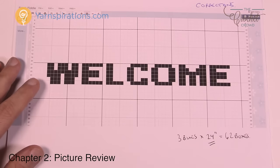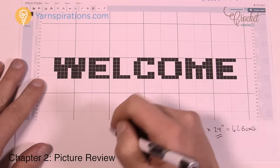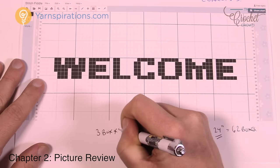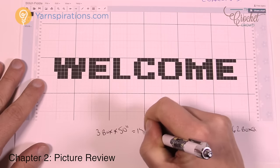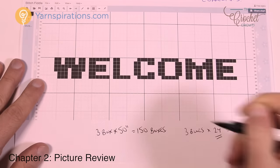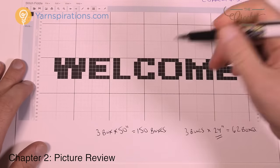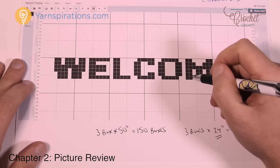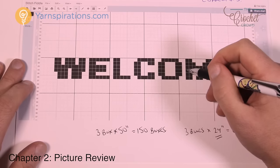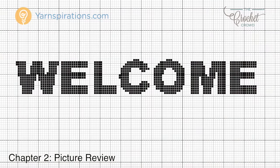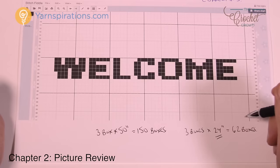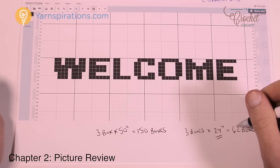So let's move on to yarn and supplies. Taking the time to calculate your gauge is really important — nothing is worse than starting a project like this and realizing your letters are way too big, or that your afghan ends up being a pillowcase. Take the time to get the right number of boxes so it's a project you only have to do once.